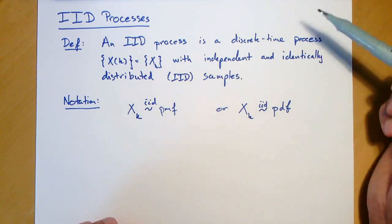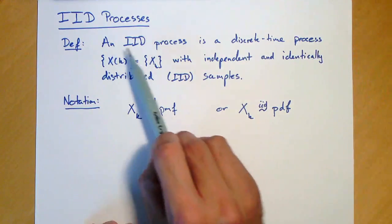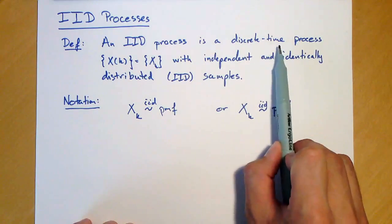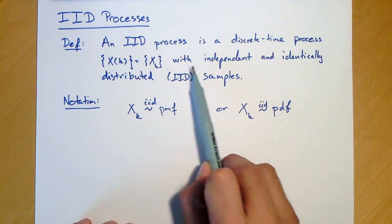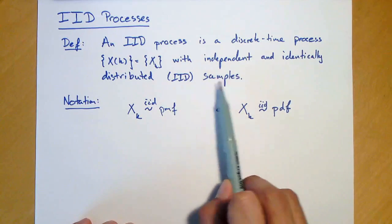The definition of an IID process is written here. An IID process is a discrete time process. We write x of k or we write xk with independent and identically distributed samples.